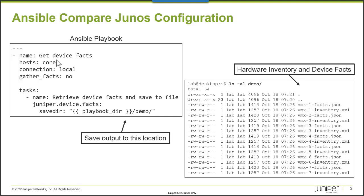This inventory group, in my case, contains seven virtual MX devices — VMX devices, VMX 1 through VMX 7.